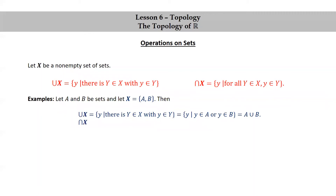Similarly, the intersection X is the set of y such that for all capital Y in X, little y is in capital Y. For this example, it's the set of y such that y is in A and y is in B, which is the intersection of A and B. So you can see that for two sets, these more general definitions of union and intersection agree with the simple definition of the union and intersection of two sets.